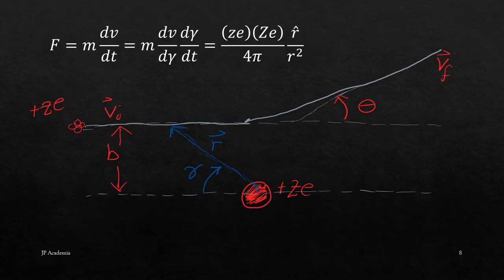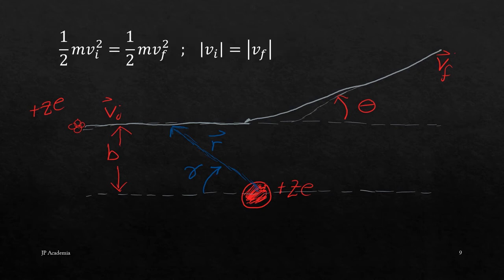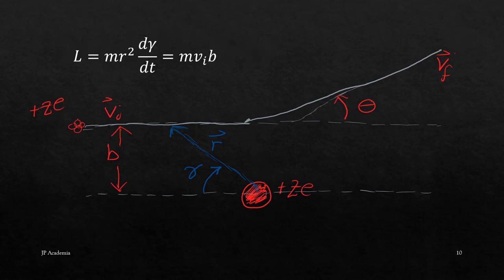This equation is Newton's second law, which shows the relationship between the rate at which momentum changes and the Coulomb force between the projectile and the target nucleus. Then we have the conservation of kinetic energy, which is a characteristic of elastic scattering on a heavy metal — the target in this assumption does not recoil when hit by the projectile. The last important equation is the conservation of angular momentum, which shows the angular velocity. You can derive the Rutherford scattering formula using these equations.